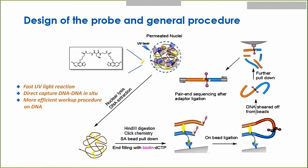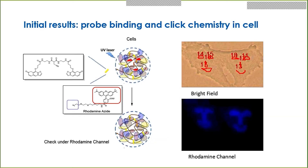We designed this method because it has obvious advantages: a very fast UV light reaction for tethering, direct capture of DNA in situ without the need for protein intermediates, and a more efficient workup procedure since you extract the whole DNA and then perform subsequent operations on the beads. To validate, we first confirmed that our probe can bind to the genome inside the cell and that the click chemistry works. After incubating with the probe, the cell is illuminated by a UV laser in a smiley-face pattern. Instead of biotin azide, we used rhodamine azide, which still performs the click reaction via azide to the alkyne group of our probe. The rhodamine fluorophore indicates whether the probe has successfully bound to the genome, and the pictures confirm it successfully binds to DNA inside the nucleus and shows the expected UV laser pattern.